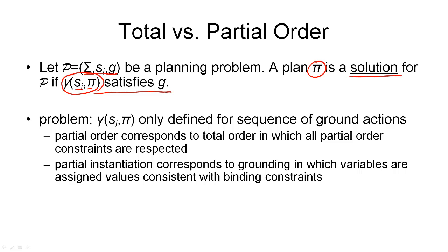The problem we now have is that the term γ(s_i, π) was only defined for a sequence of ground actions, since those were the only plans considered so far. The plans we are considering now are only partially ordered. We can turn this partial order into a total order by respecting all the partial order constraints, but the question is which of these total orderings to use in our definition of γ(s_i, π). In general, there could be an exponential number of total orderings corresponding to one partial order. Similarly, a partial plan may only contain a partial instantiation of variables, so there may be many ways to fully ground the plan. The simplest way to address this is to consider a new definition of a partial order solution.